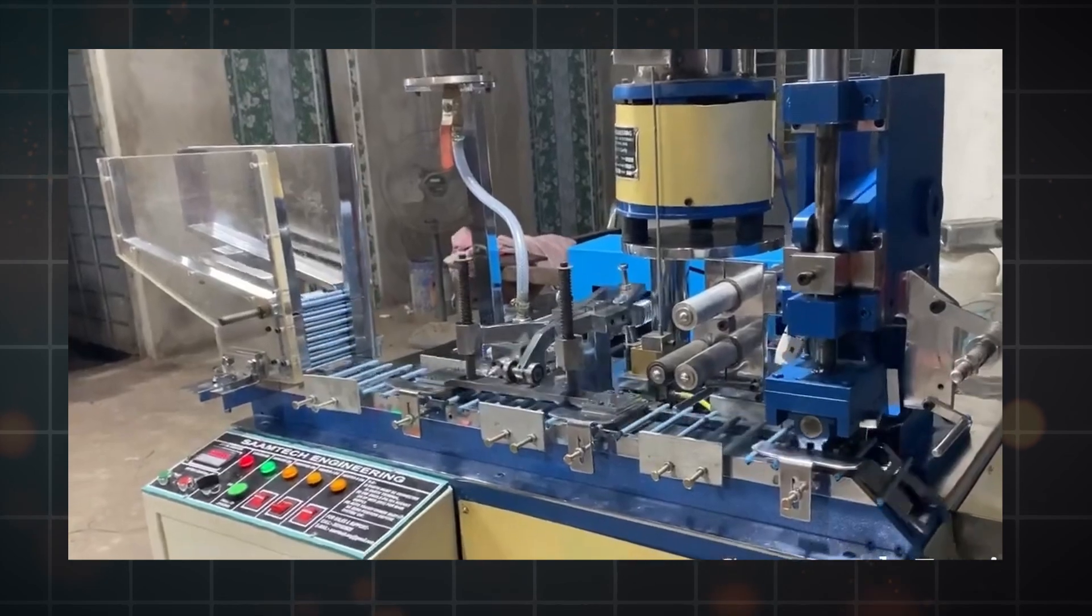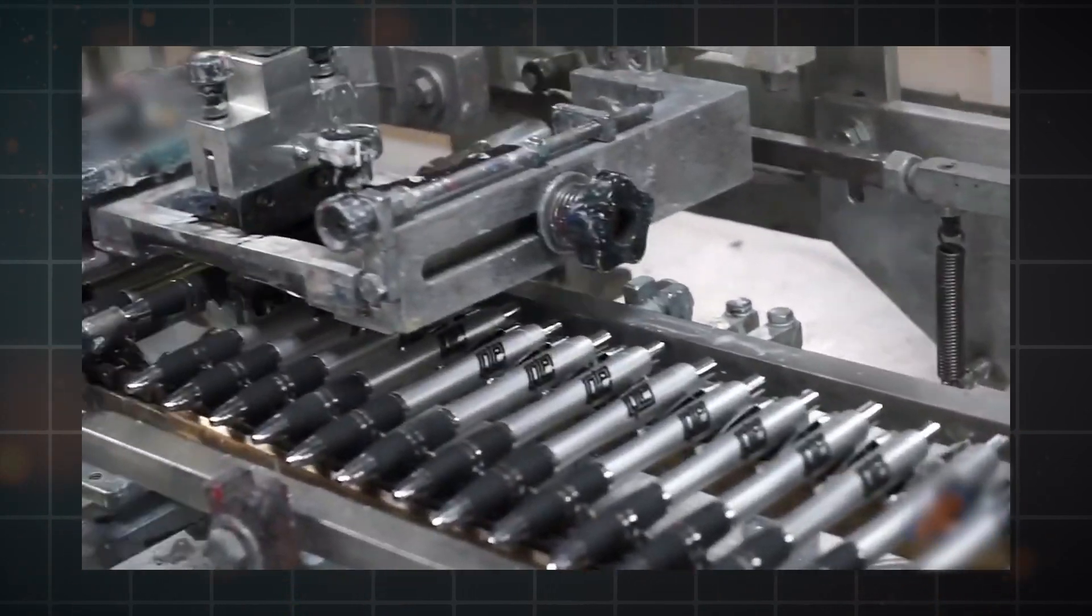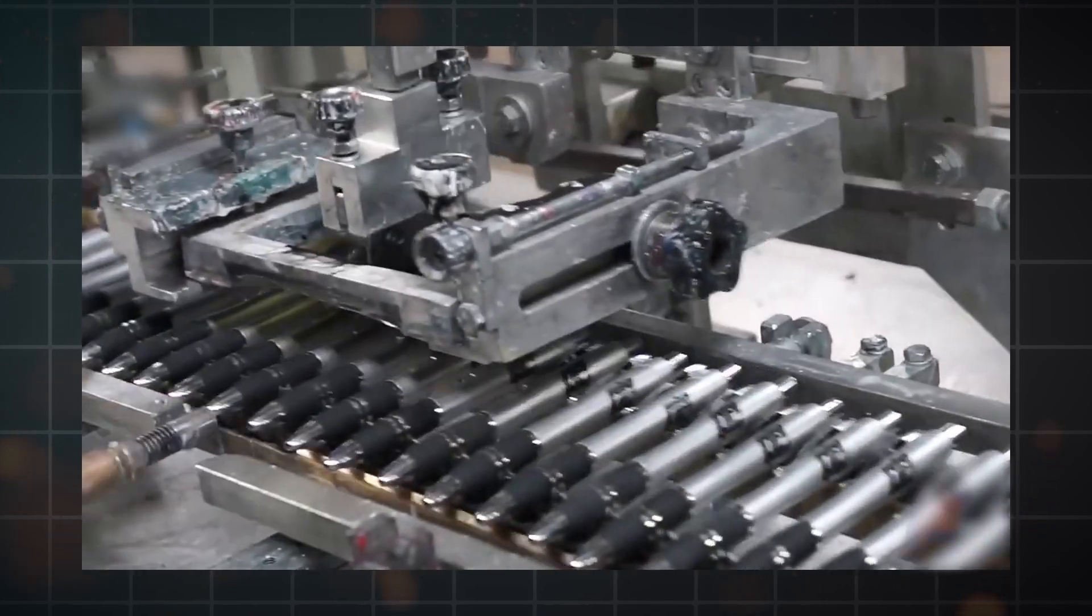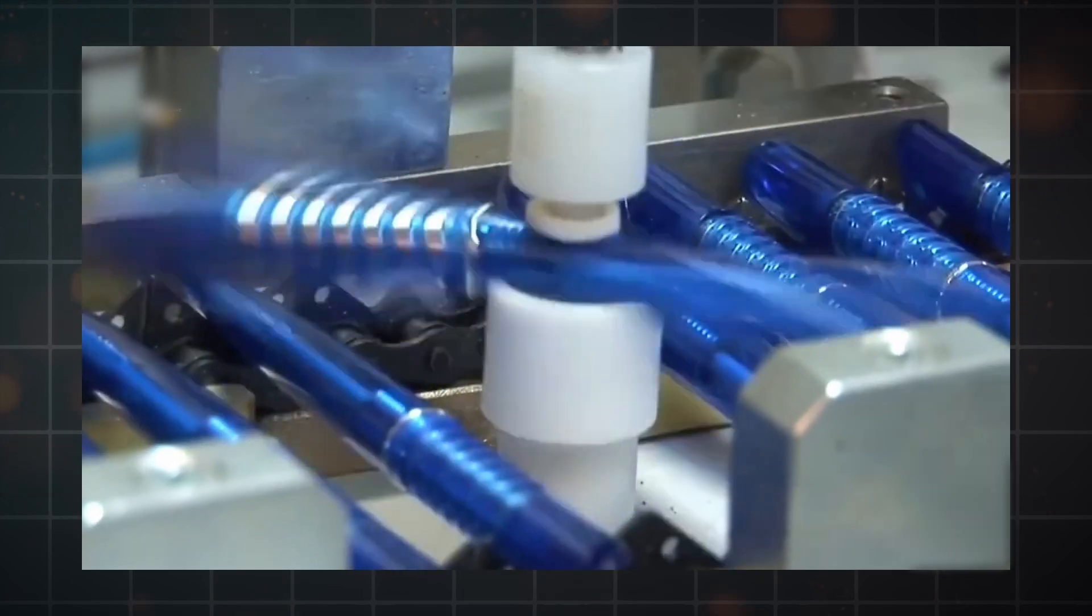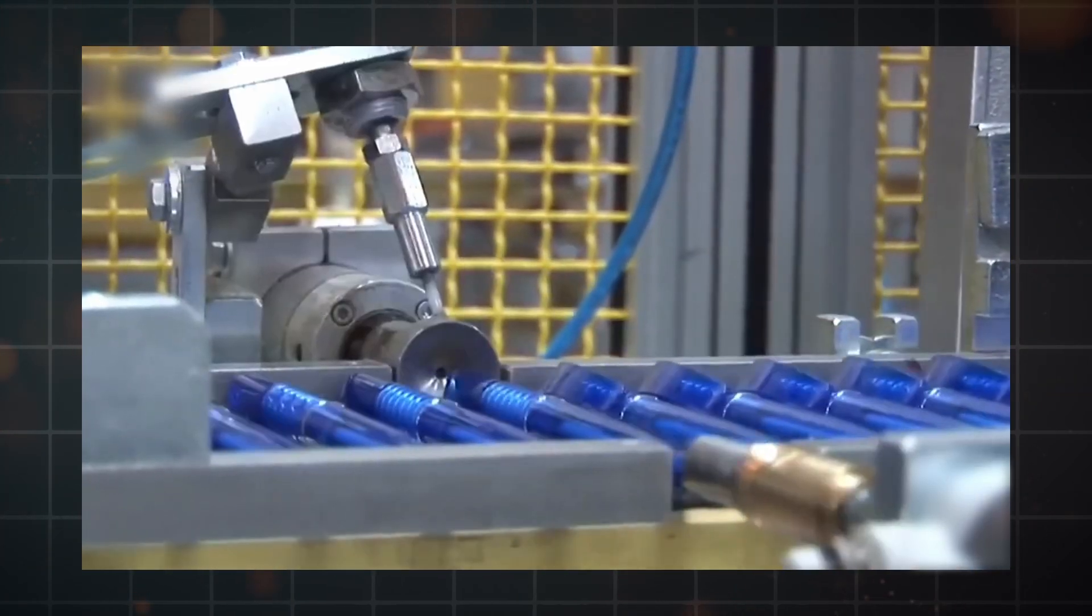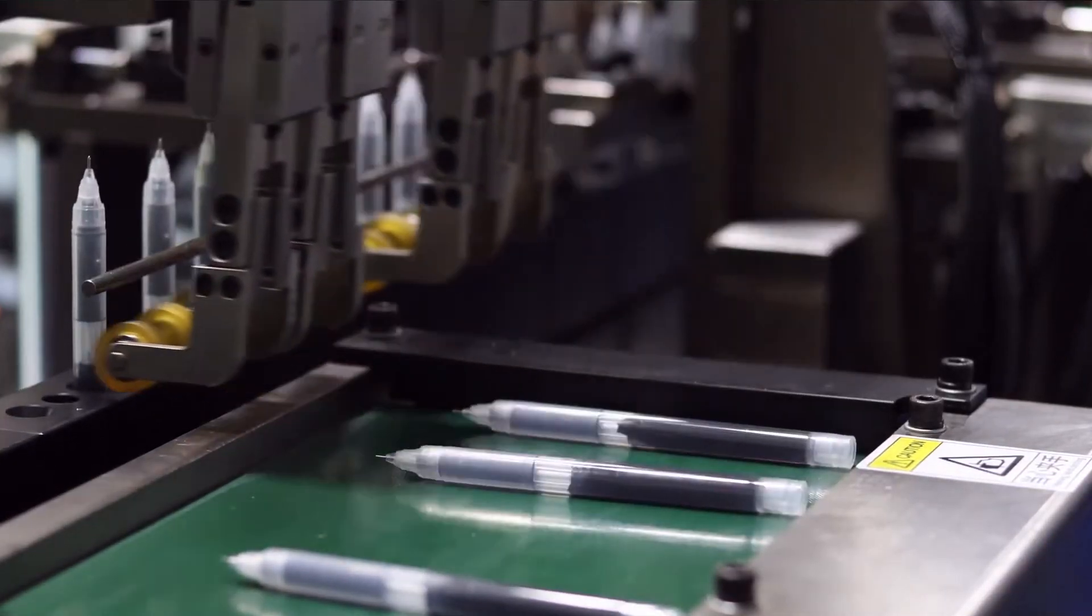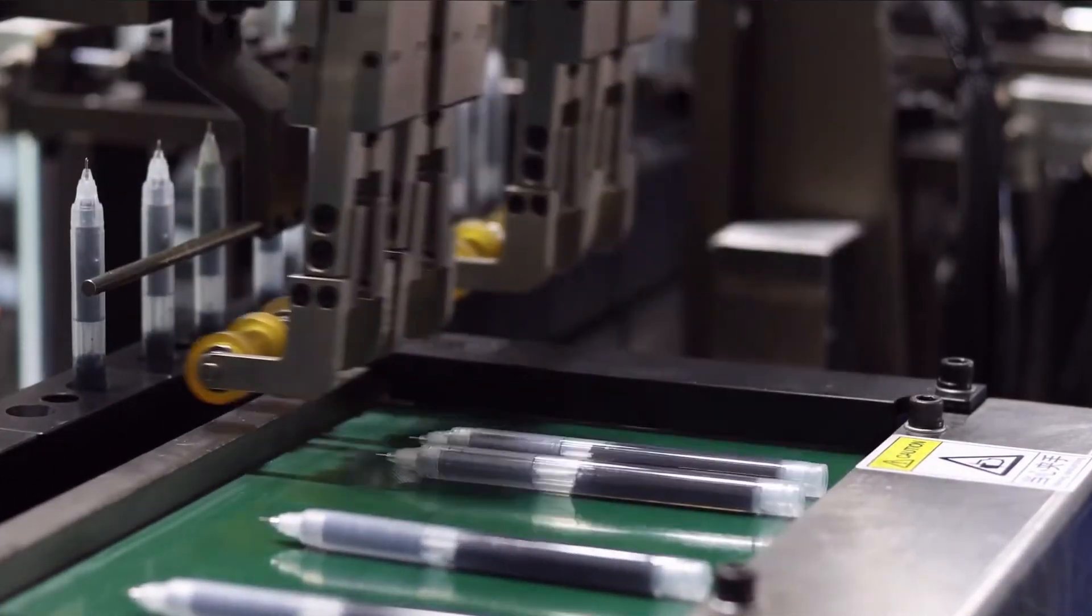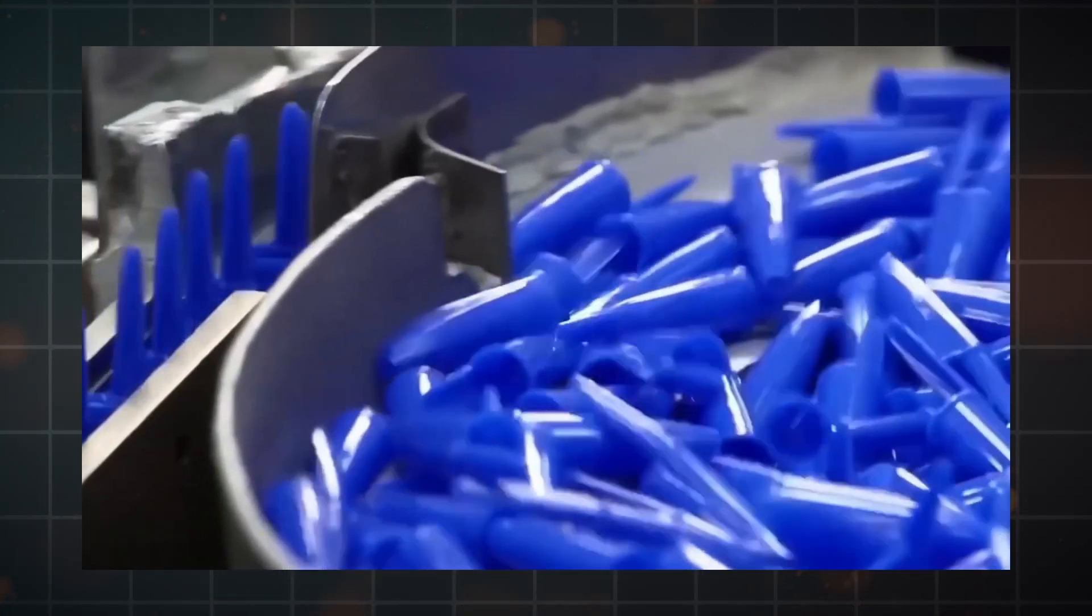Now that the ballpoint pens are assembled, the next crucial step in the manufacturing process is quality testing. This step ensures that every pen meets the high standards expected for writing performance and reliability. Quality testing for ballpoint pens is quite a detailed affair. It involves several tests to check the pen's functionality and durability. For instance, one common test is for the ink flow.